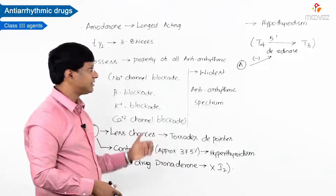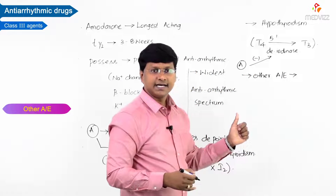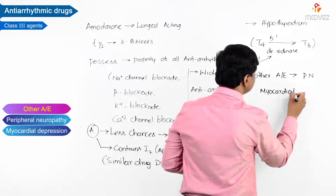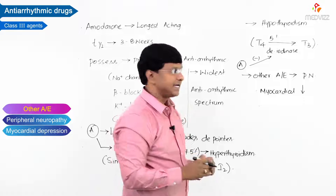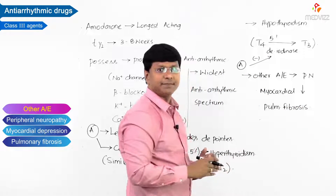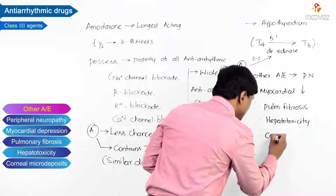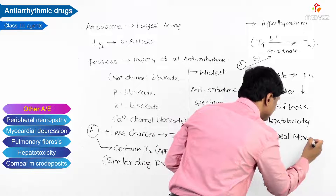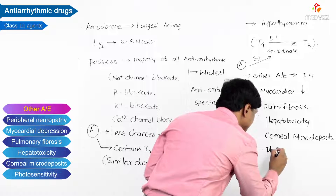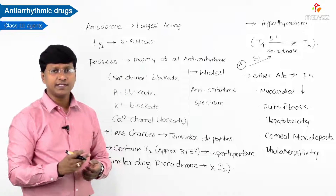Apart from thyroid-related disorders, other adverse effects of amiodarone include peripheral neuropathy, myocardial depression, pulmonary fibrosis, hepatotoxicity, corneal micro deposits, and photosensitivity.